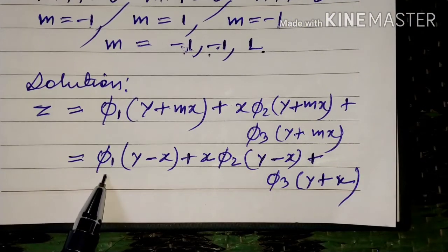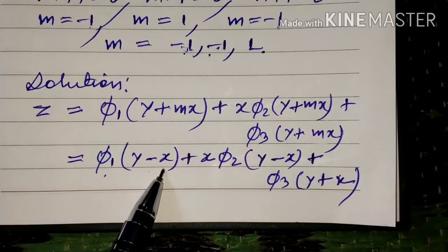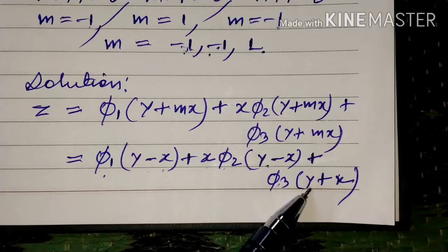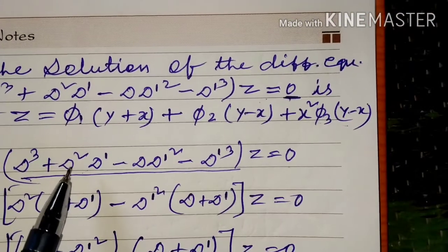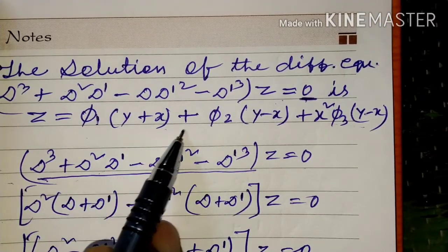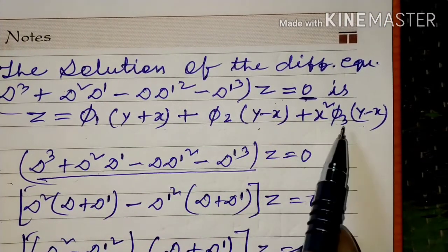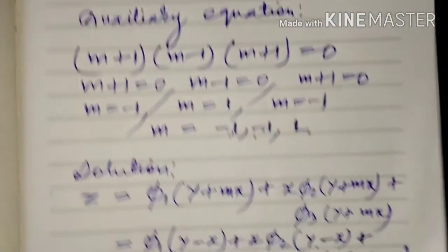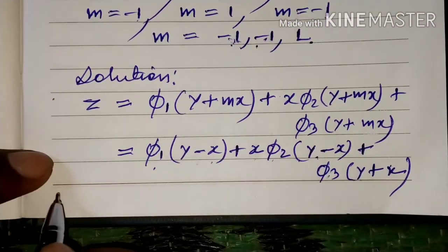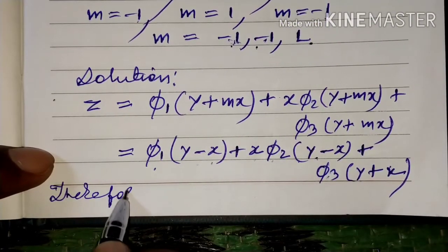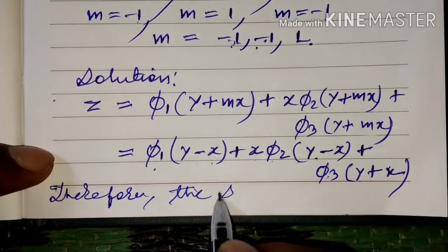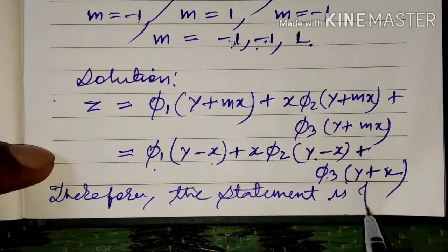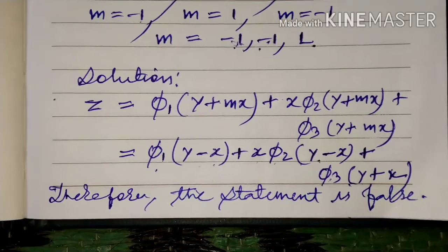हमें solution के रूप में प्राप्त होता है: z = φ₁(y - x) + x·φ₂(y - x) + φ₃(y + x)। लेकिन question में दिया हुआ है: z = φ₁(y + x) + φ₂(y - x) + x²·φ₃(y - x), जो कि गलत है। Therefore, the given statement is false.